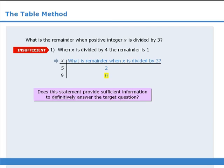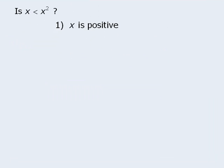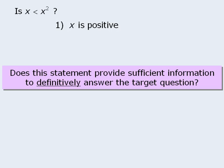Now let's look at one more example. The target question here asks: is x less than x squared? And statement 1 tells us that x is positive. Does this statement provide enough information to answer the target question? We'll use a table to organize our results. We'll choose some values for x that satisfy the condition in statement 1 that says x is positive, and then ask our target question: is x less than x squared?